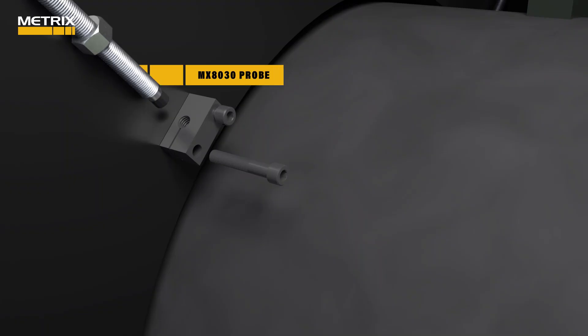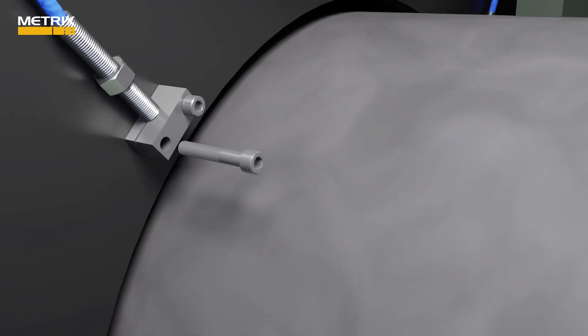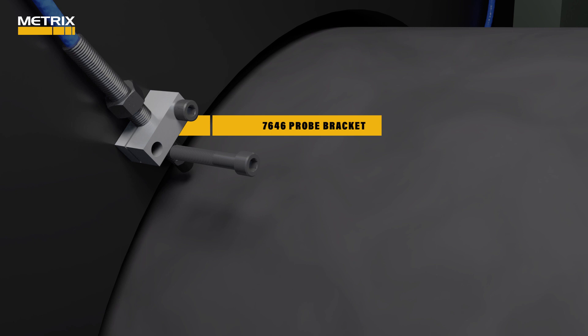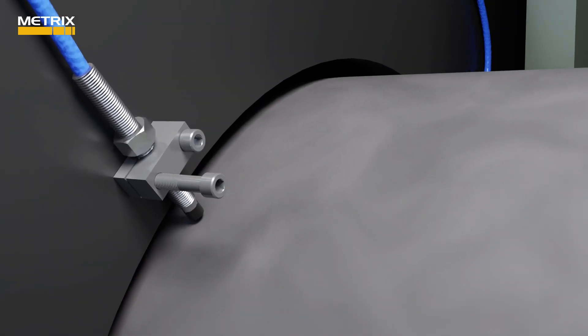The MX8030 forward mount probes are inserted into the Metrix 7646 probe bracket, making a sure and rigid connection.